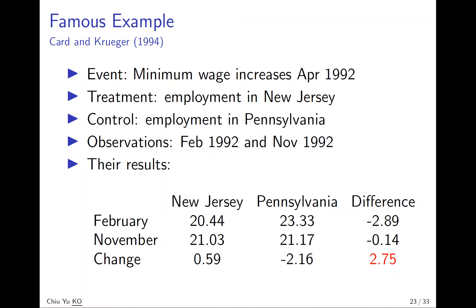Comparing with Pennsylvania, which is nearby New Jersey, employment actually went down. Indeed, in 1992 the U.S. economy was in a recession. So look at the difference: New Jersey actually has a 2.75 difference, more than 10% of employment, which is huge. This is controversial because it goes against what we learn in our first class of microeconomics.